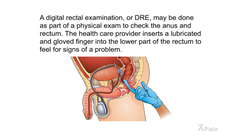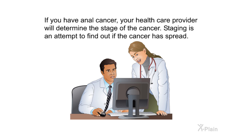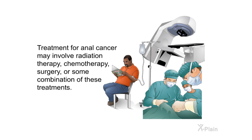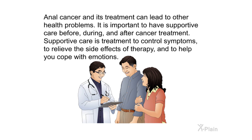A digital rectal examination, or DRE, may be done as part of a physical exam, where the provider inserts a lubricated, gloved finger into the lower rectum to feel for signs of a problem. If you have anal cancer, your health care provider will determine the stage using numbers 1 to 4, where a lower number indicates an earlier stage, to help decide the best course of treatment. Treatment may involve radiation therapy, chemotherapy, surgery, or a combination. It is important to have supportive care before, during, and after treatment to control symptoms, relieve side effects, and help cope with emotions.